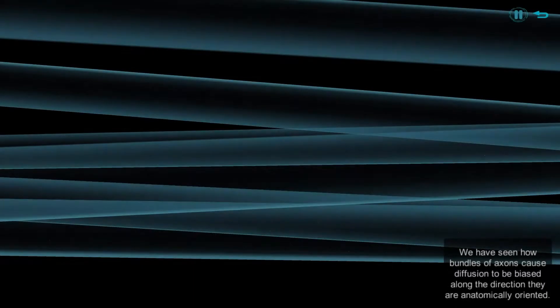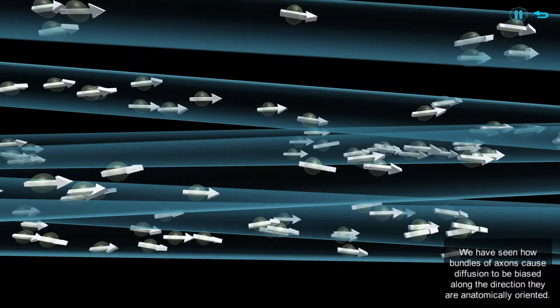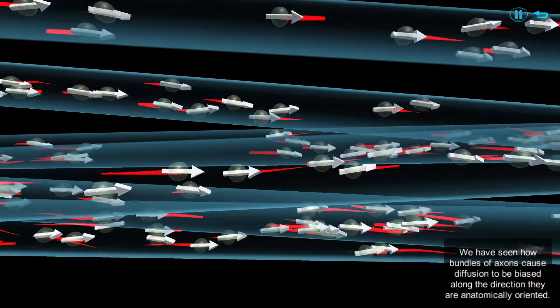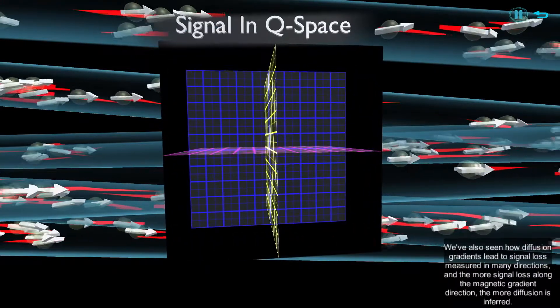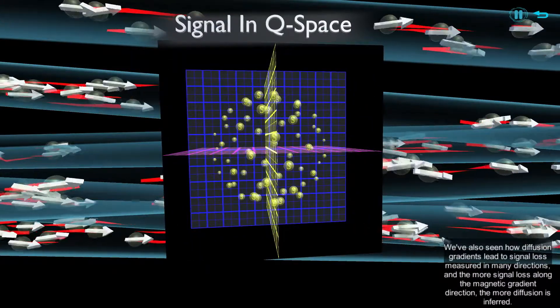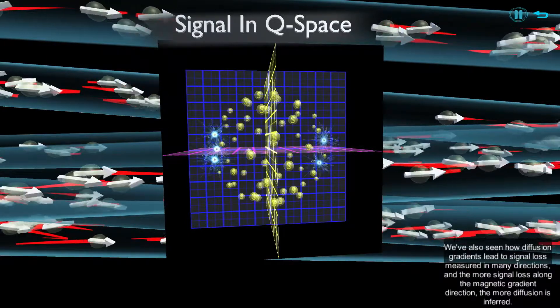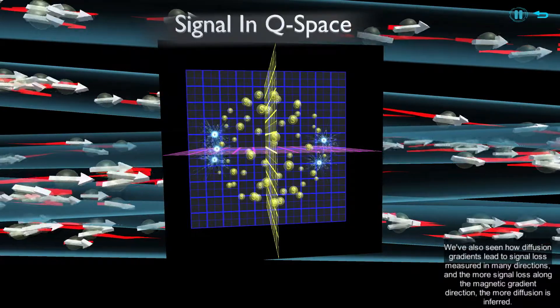We have seen how bundles of axons cause diffusion to be biased along the direction they are anatomically oriented. We've also seen how diffusion gradients lead to signal loss measured in many directions, and the more signal loss along the magnetic gradient direction, the more diffusion is inferred.